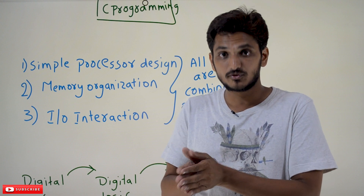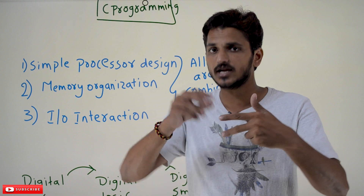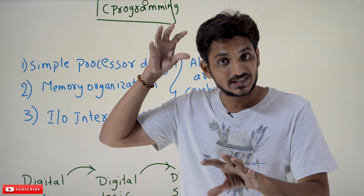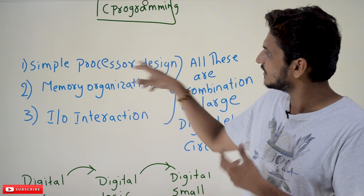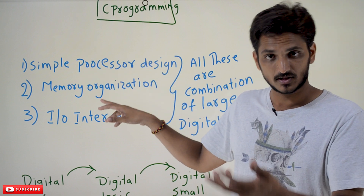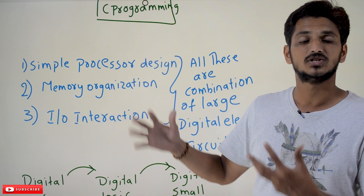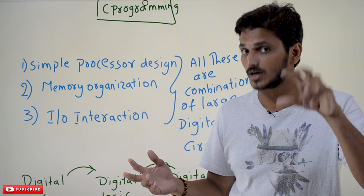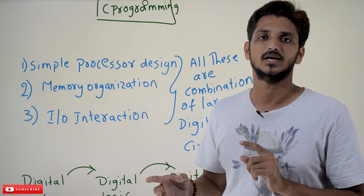By the end of two subjects — digital logic design and computer organization and architecture — you have to achieve the knowledge of how a simple processor is designed, how memory organization works, and how I/O interactions with these devices occur. This is the level of understanding you have to reach after completion of these two subjects.